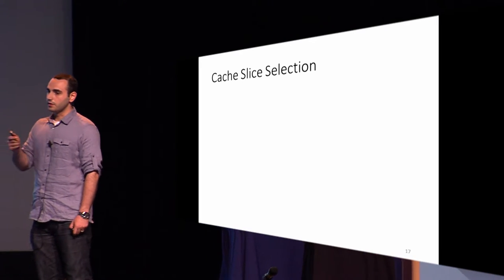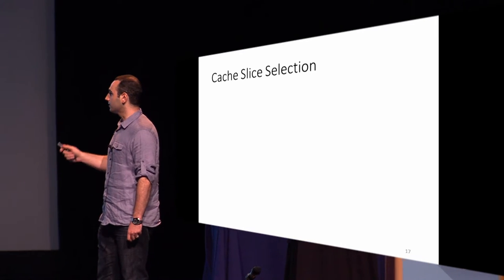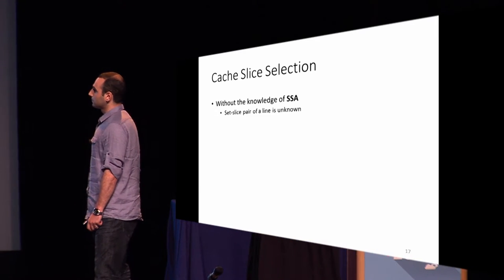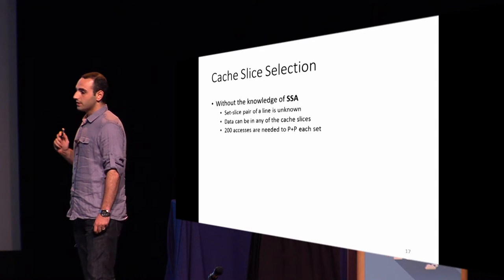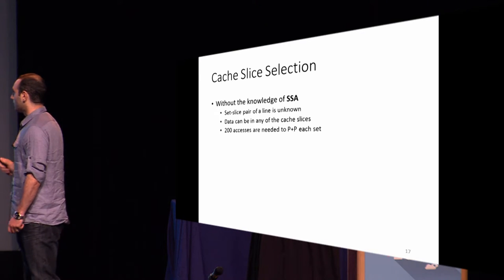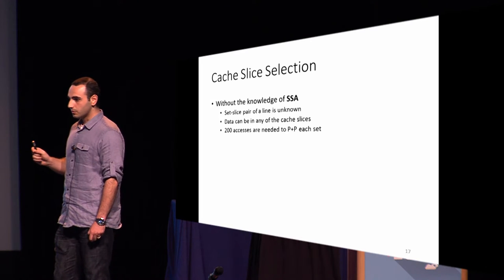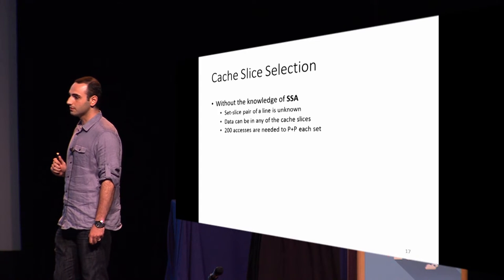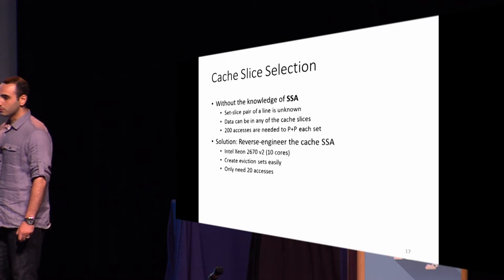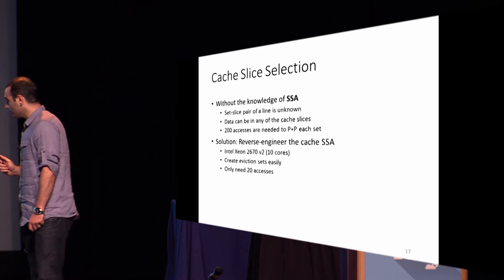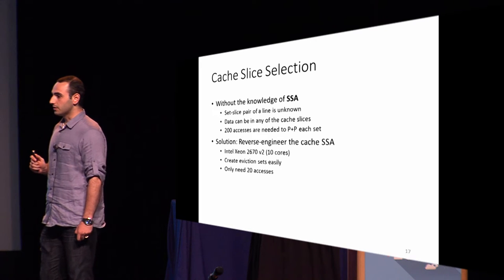However, there is still the problem of cache slice selection. In modern Intel CPUs, the last-level cache is divided into different slices — a 10-core machine has 10 slices. While any slice can be accessed by any core, it adds an additional layer of abstraction. Without knowing the slice selection algorithm, we don't know which set-slice pair our data resides in, which could force us to make 200 accesses instead of 20 to ensure eviction. Our solution was to reverse-engineer the cache slice selection algorithm for the Intel Xeon E5-2670 v2, a 10-core CPU. Using this algorithm, we create eviction sets efficiently with only 20 accesses, making our attack fast and reliable.